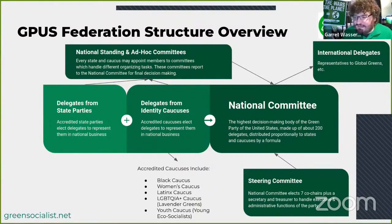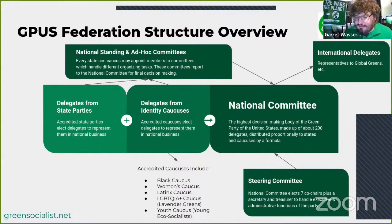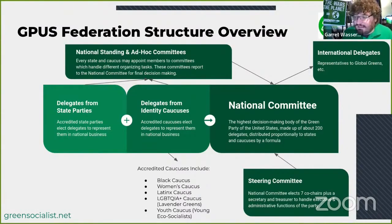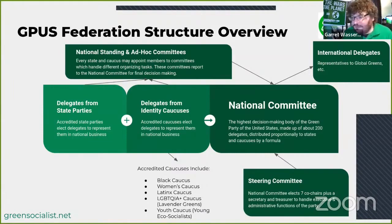On the left are the state parties representing each state, and the identity caucuses that represent particular identities. The five that currently exist are the National Black Caucus, the Women's Caucus, the Latinx Caucus, the Lavender Greens — our LGBTQIA caucus — and the Young Eco-Socialists, which is the youth caucus for people under 35. All of these groups have been marginalized to varying degrees in U.S. history, so we try to ensure they have extra representation in our process. Delegates from these state parties and caucuses go to the national committee, which votes on decisions.